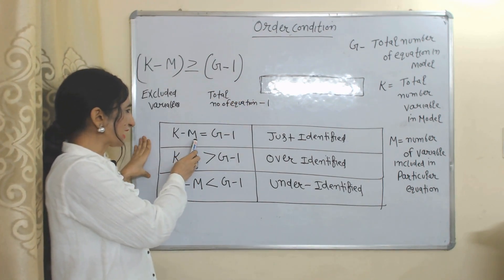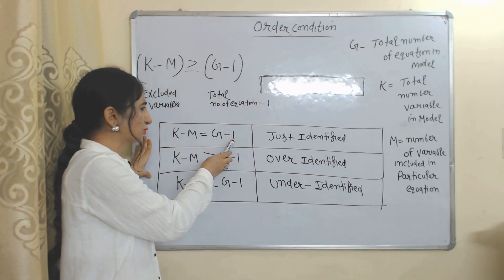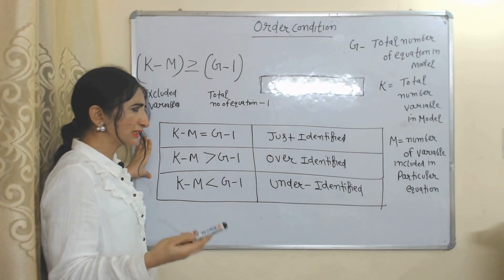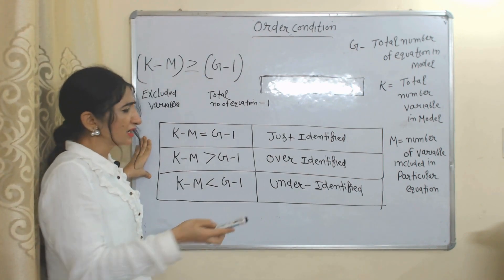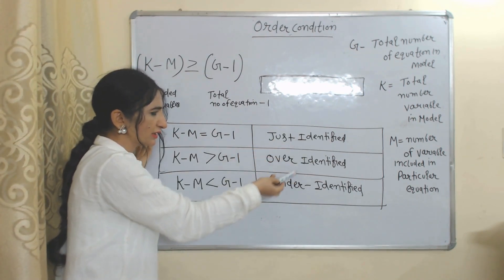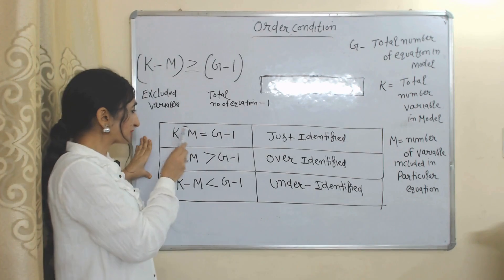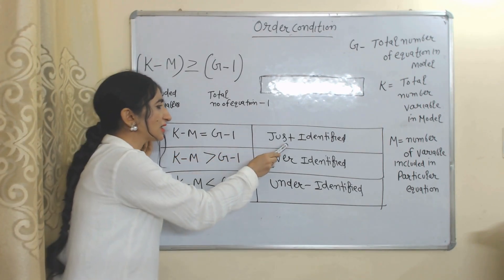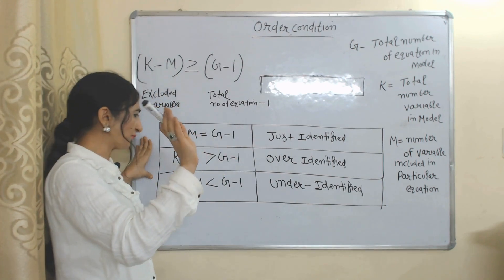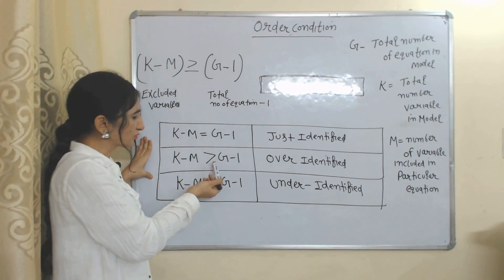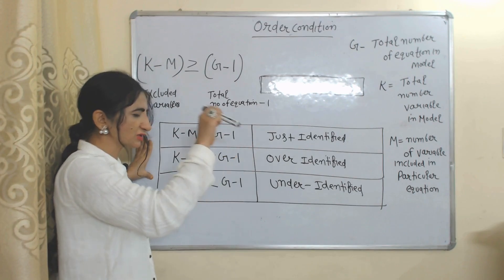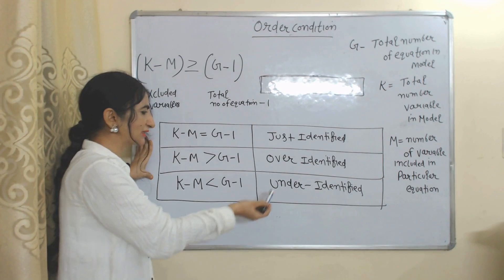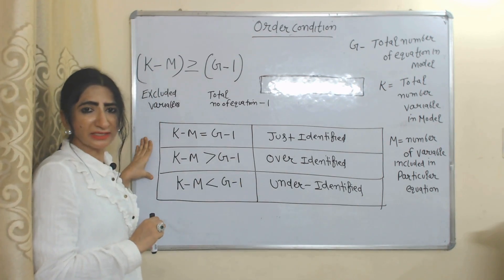When K minus M is equal to G minus 1, the equation is just identified, or exactly identified. If K minus M is greater than G minus 1, the equation is over-identified. If K minus M is less than G minus 1, the equation is under-identified.